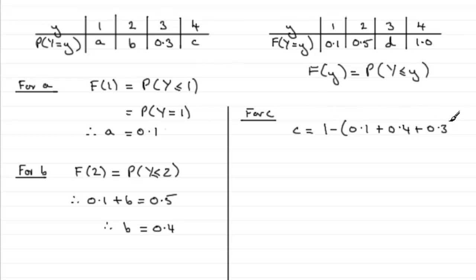So we can then work this out: 1 minus 0.8, that gives us 0.2 for c.